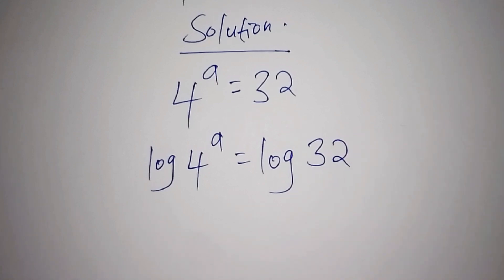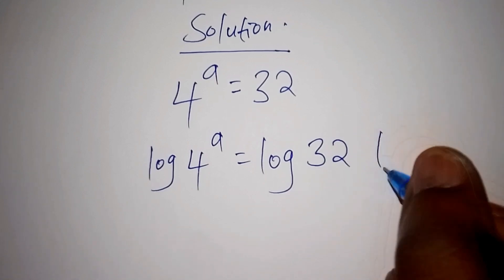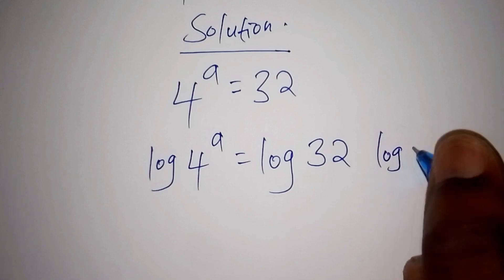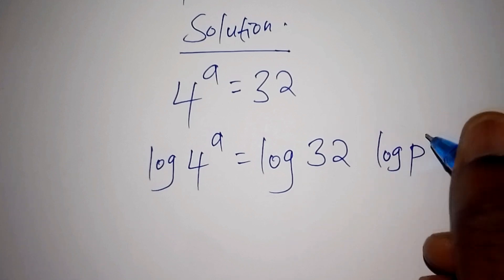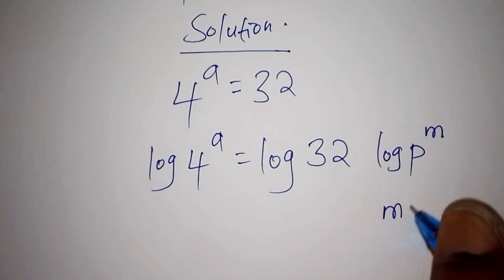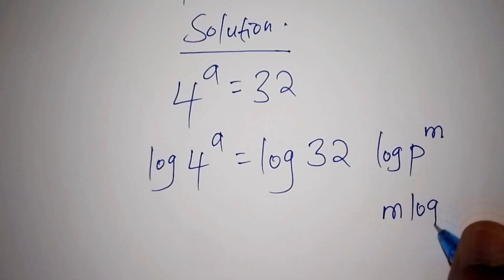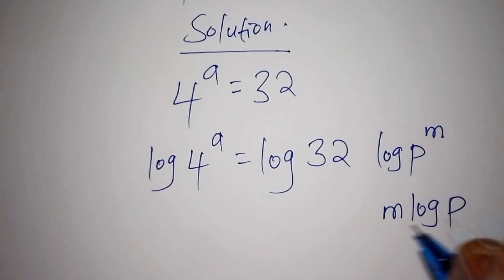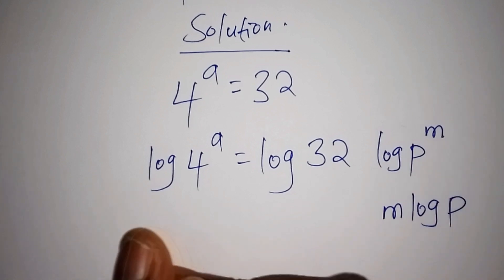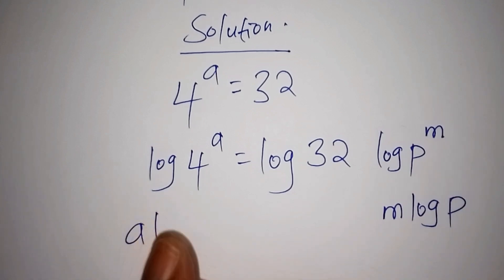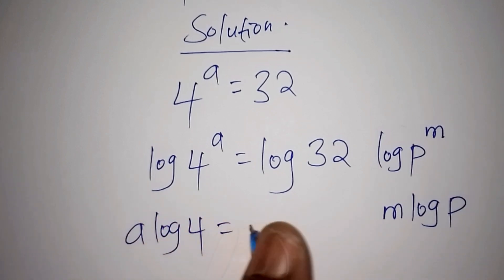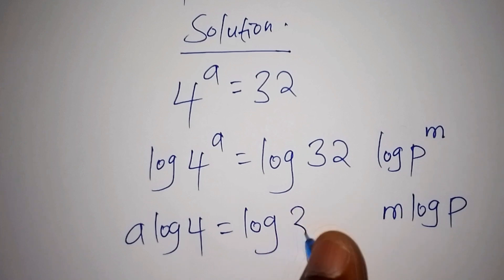From here now, what you need to do — assuming that we have the log of p to the power of m, this can also be written as m times the log of p. So here now we shall have a times the log of 4 is equals to the log of 32.